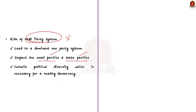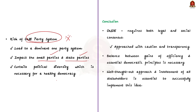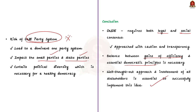The implementation of simultaneous elections requires both legal and social consensus. These kinds of moves should be approached with caution and transparency. We should not allow gains of efficiency to compromise essential democratic principles. A gradual, well-thought approach with the involvement of all stakeholders is essential to successfully implement this idea of One Nation, One Election.